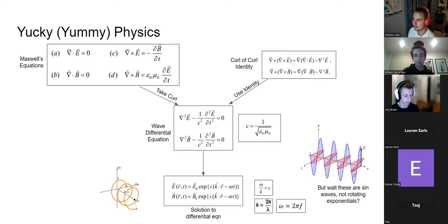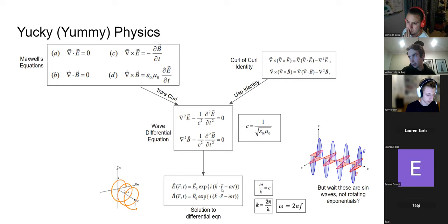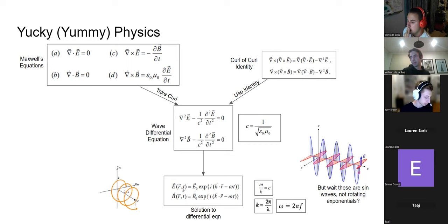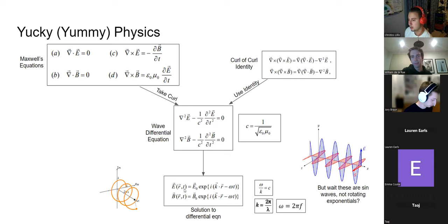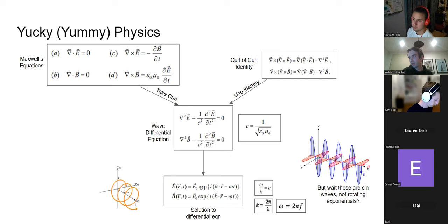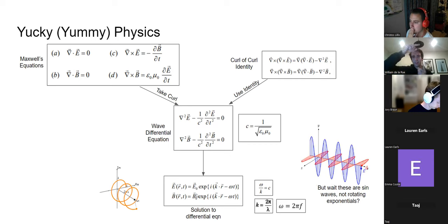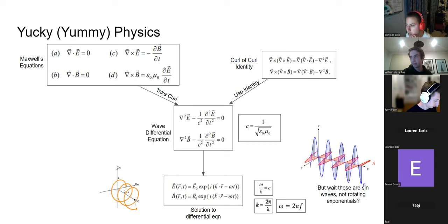Good question — what's E(r,t) on the left? It's the vector of the electric field at position r at time t. The e₀ is a vector pointing in the direction transverse to travel, and as we apply the complex exponential, that e₀ gets rotated around. The same applies for the B vector.